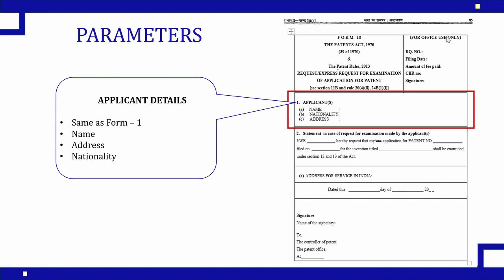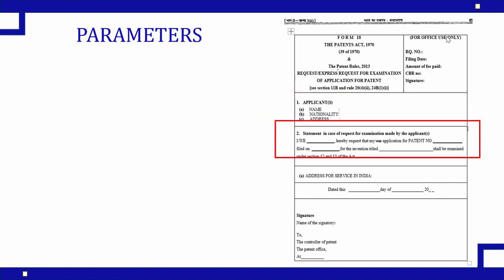The applicant details section is similar to what we learned in Form 1 and Form 2. The data needs to be the same — you need to replicate the data of the applicant which was submitted at the time of application filing in Form 1 and 2. All details including name, address, and nationality need to be replicated here. If there are multiple applicants, every applicant's data needs to be submitted here.